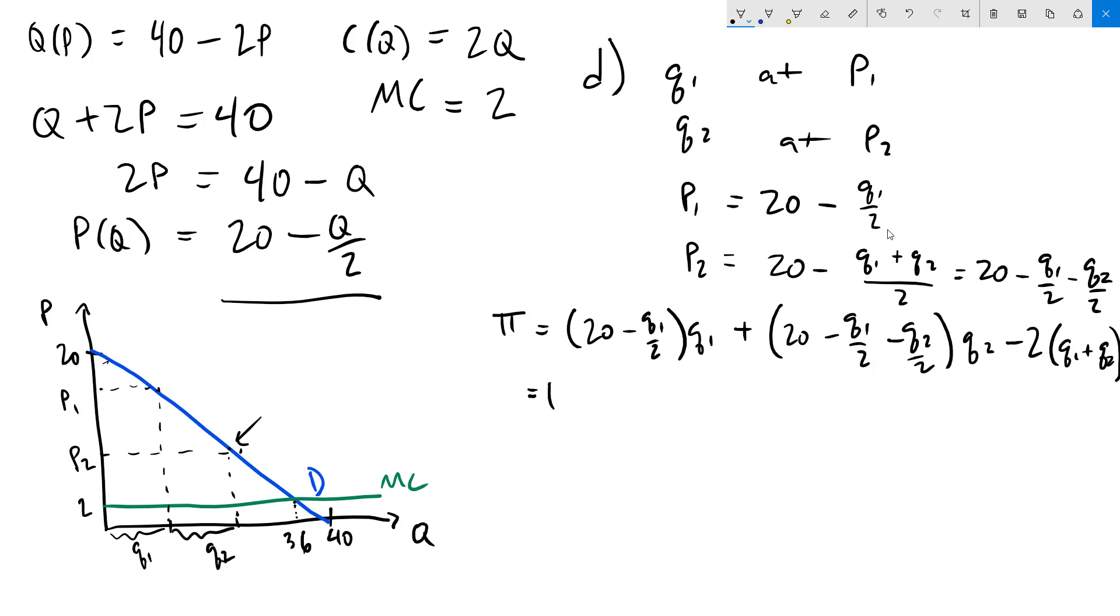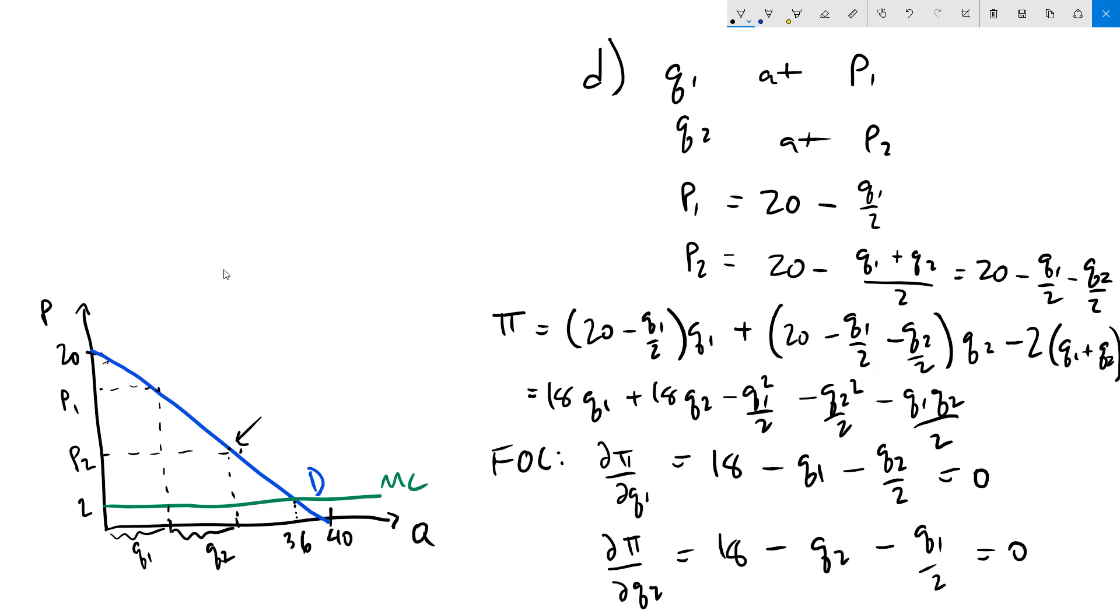And now we are ready to take the first order conditions. We'll take the partial with respect to Q1 which is 18 minus Q1 minus Q2 over 2 equals 0 and then with respect to Q2 which is 18 minus Q2 minus Q1 over 2 equals 0. All that's left is to solve the system. I'll mark these out as equations 1 and 2 for reference.